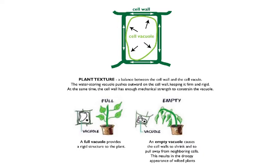You can see the effects of osmosis on a plant and how it causes wilting. In healthy plant tissue, there is a balance: the water-storing vacuole pushes outward on the cell wall, keeping it firm and rigid, while the cell wall has enough mechanical strength to constrain the vacuole. A full vacuole provides a rigid structure, but an empty vacuole causes the cell walls to shrink and pull away from neighboring cells, resulting in the droopy appearance of wilted plants.